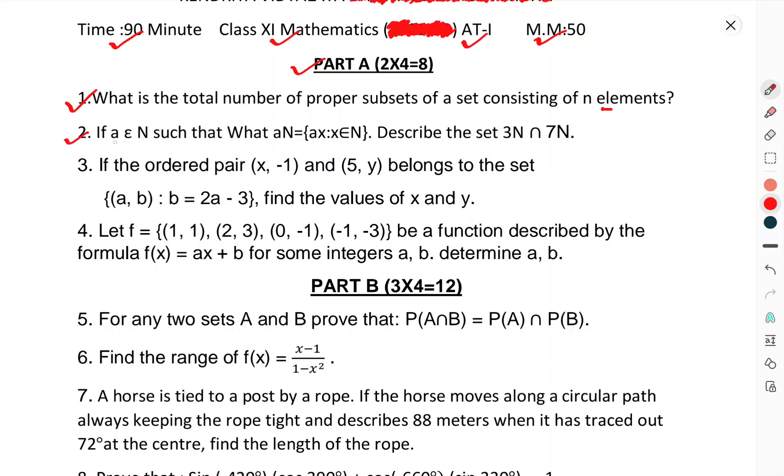Question number 2: If a belongs to N such that A = {ax: x∈N}. Describe the set 3N ∩ 7N.